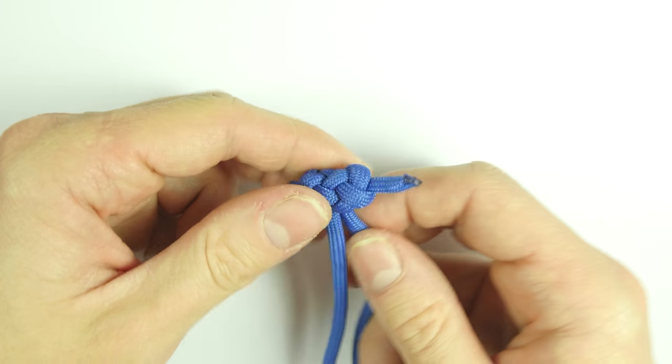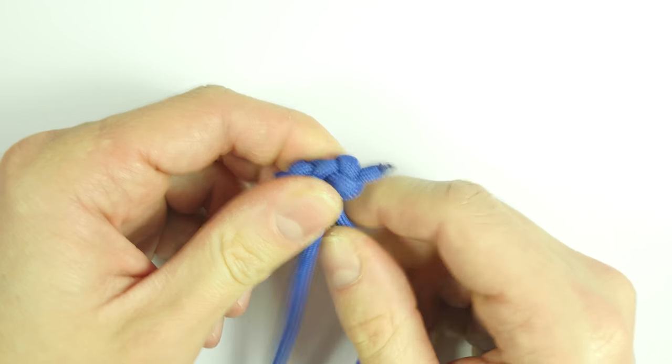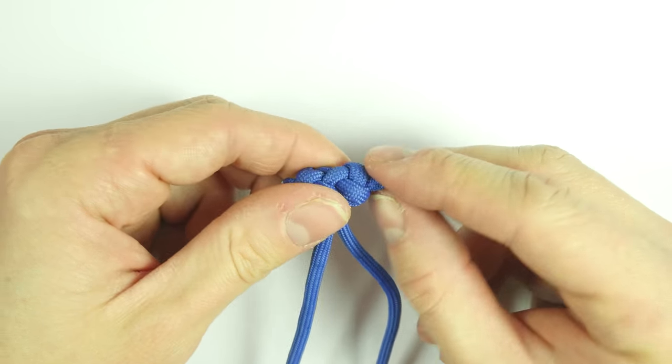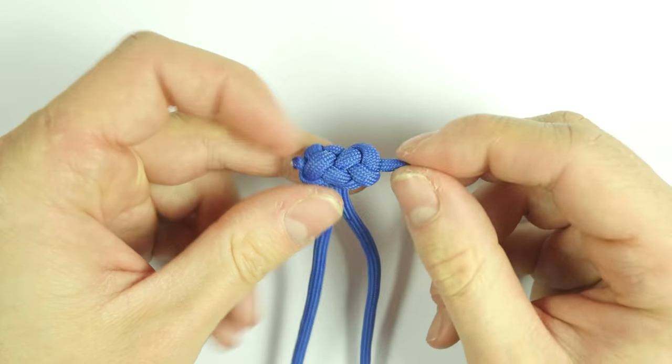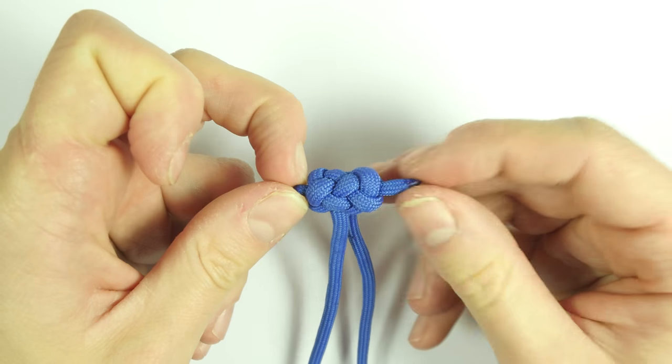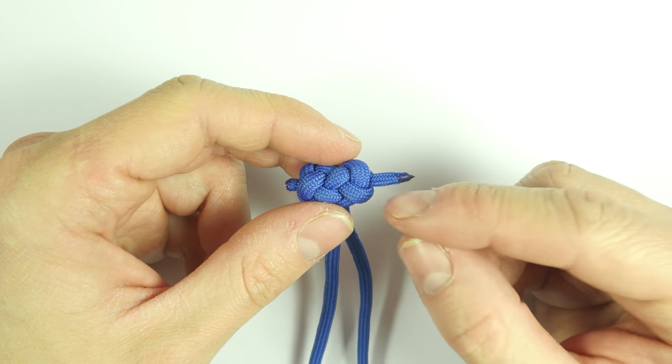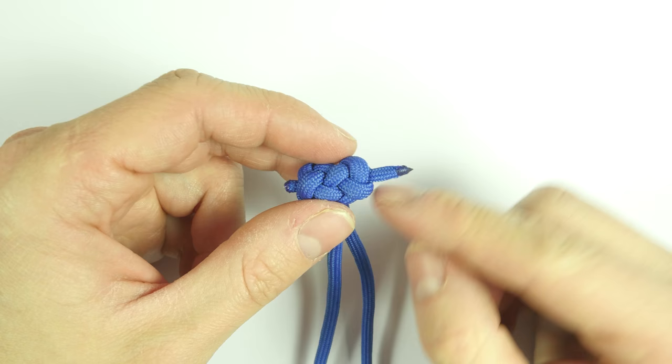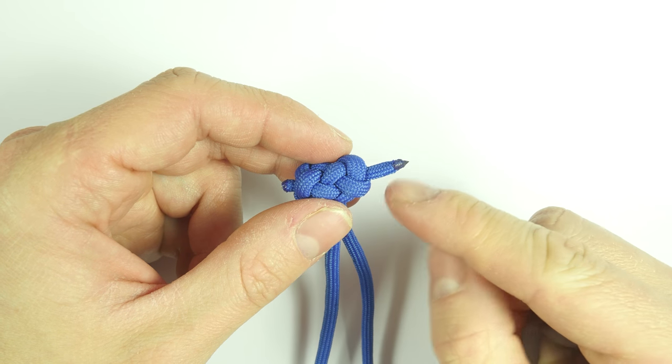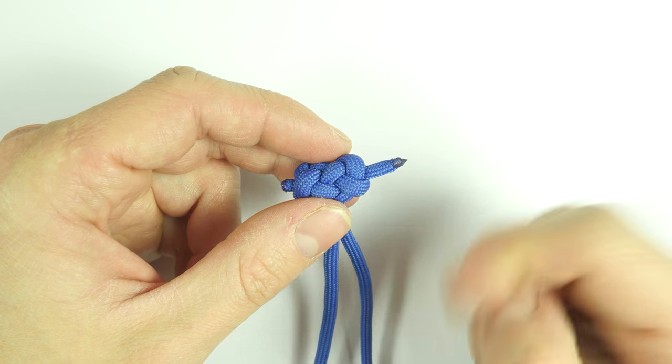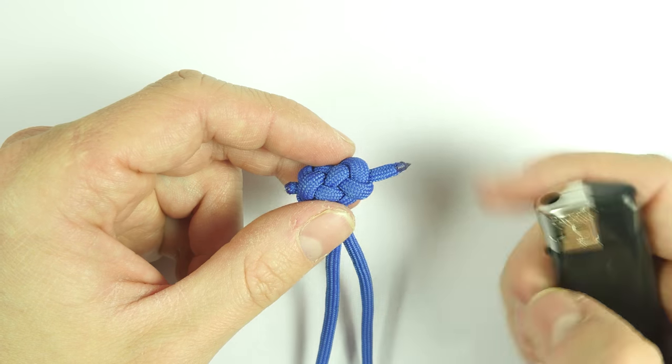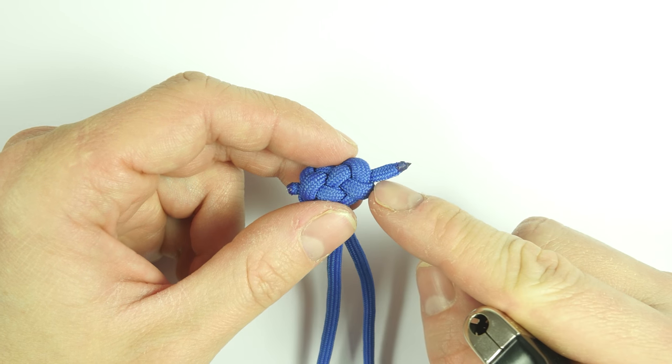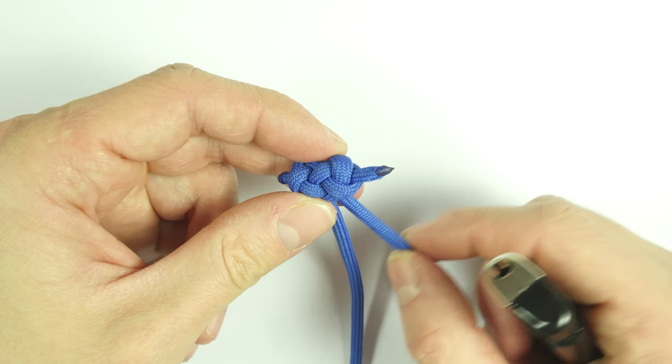One of the ends tends to slip back into the loop. Now to prevent this, I recommend trimming both ends and melting them into a nice mushroom cap. So what you do is you trim it, and you melt it, then press on it in order to flatten out the end. This is going to prevent it from slipping back into the loop.